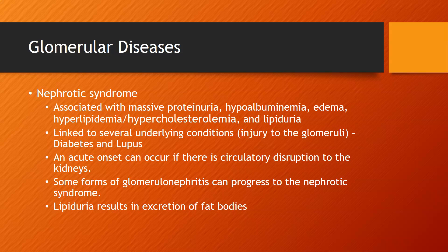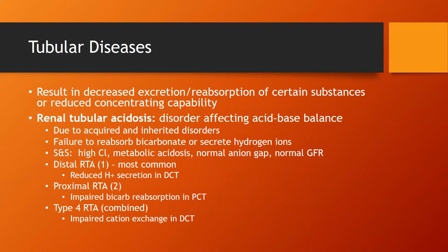An acute onset can occur if there's circulatory disruption to the kidneys — for example, if the patient goes into shock, preventing blood from flowing to the kidneys normally. Some forms of glomerulonephritis can progress to nephrotic syndrome. Lipiduria results in the excretion of fat bodies, which can be seen on a urinalysis.